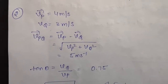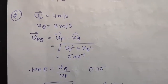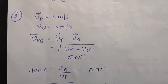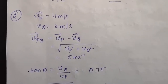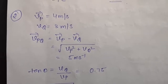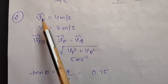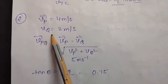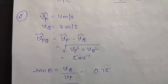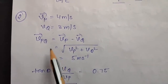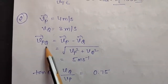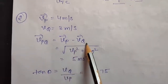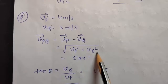The second question says: the velocity of particle P due east is 4 m/s and that of Q is 3 m/s due south. What is the velocity of P with respect to Q? You are given vp equal to 4 m/s and vq equal to 3 m/s. The velocity of P with respect to Q uses the formula of relative velocity: vp minus vq, or you can say under root of vp² plus vq².